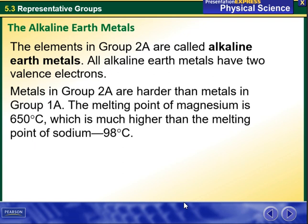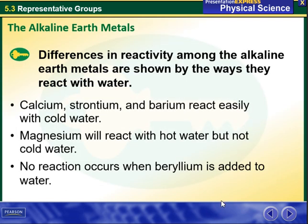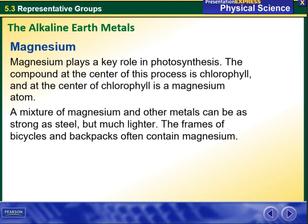All alkaline earth metals have two valence electrons. Calcium, strontium, and barium react easily with cold water. Magnesium will react with hot water but not with cold water. No reaction occurs when beryllium is added to water. Magnesium plays a key role in photosynthesis — the compound at the center of this process is chlorophyll, and at the center of chlorophyll is a magnesium atom.